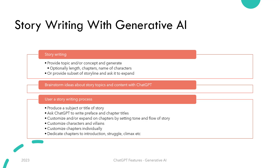ChatGPT is an excellent brainstorming tool. A suitable process can be to come up with the story title and then ask ChatGPT to write a preface and chapter titles. Then expand on these chapters by setting the tone and flow — for example, the first chapter can be for the setting and introduction of characters, the second chapter can introduce the problem or villain, chapter 3 can be dedicated to the contest between characters and the villain, and chapter 4 can be the climax. You can add further details like chapter 3 needing to be suspenseful and eventful.